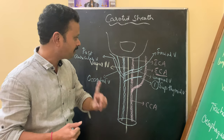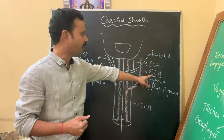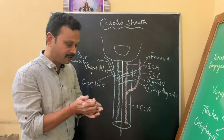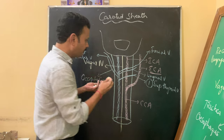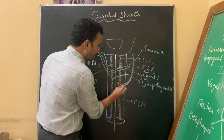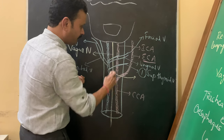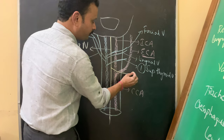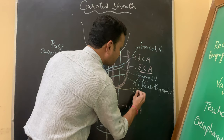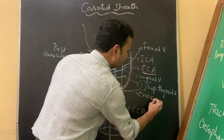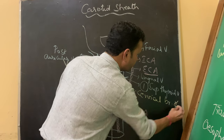So the structures piercing the carotid sheath: number one is external carotid artery, number two are these five veins, and number three is the cervical branch of the vagus nerve. The vagus nerve gives off a branch in the cervical region, which is called the cervical branch of the vagus nerve.